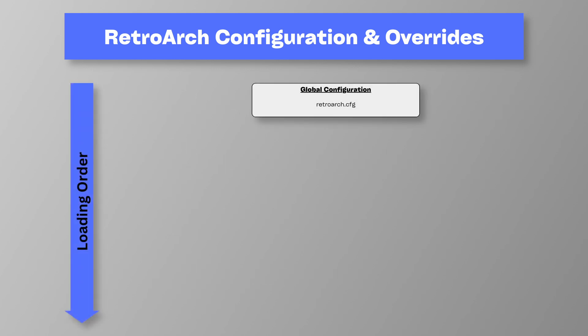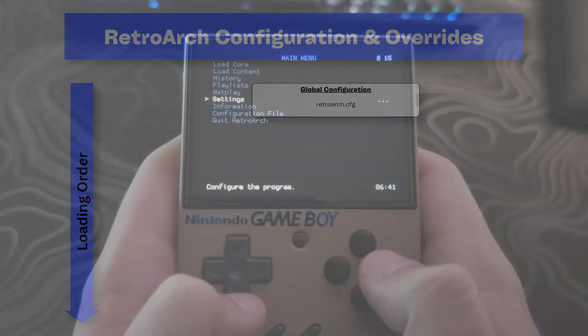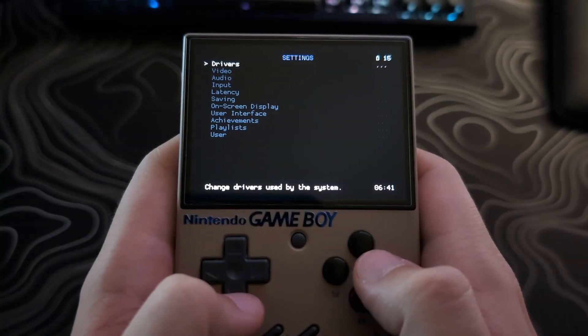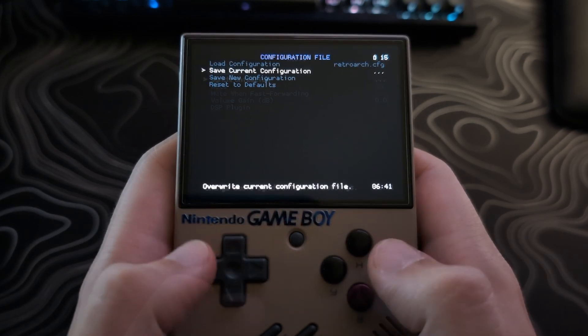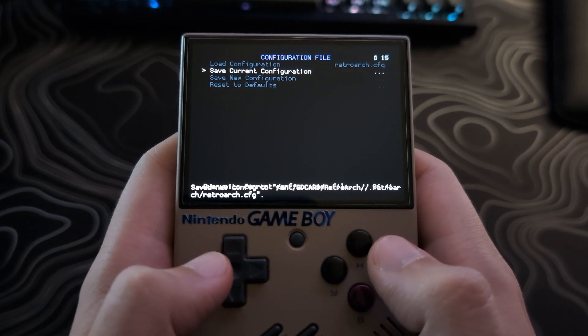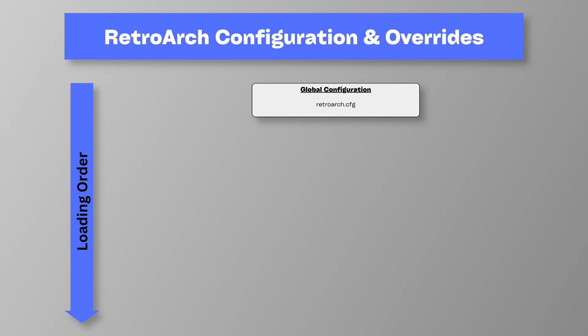RetroArch settings follow a hierarchy, and I have made a graphic to help explain this. Let's look at the global settings as an example. At the top is the global configuration named RetroArch.cfg. It contains the general settings of RetroArch. If you were to make a change in the main menu settings page and save the configuration, it would affect all games for all systems.